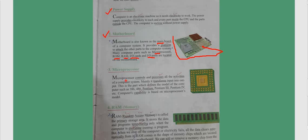The third essential component is the microprocessor. The microprocessor controls and processes all the activities of a computer system. Mainly it transforms input into output. Input is the data that we enter into the computer, and output is the result we get from the computer. The microprocessor defines the model of the computer and its technology. There are different types such as 386, 486, Pentium, Pentium 3, Pentium 4, etc. Computer capability is based on the microprocessor model.